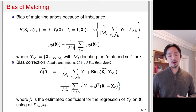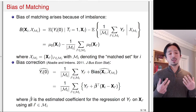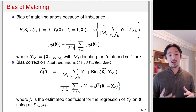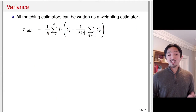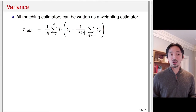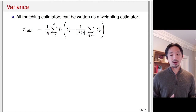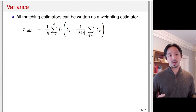Matching might still lead to bias due to remaining differences, which can be adjusted using a model. This indicates that matching can be used in conjunction with model-based adjustment — matching makes the treatment and control groups sufficiently similar, and then model-based adjustment handles the remaining imbalance in X. Turning to variance: the variance computation is very complicated for matching estimators. One way to think about it: all matching estimators can be written as weighting estimators, which is why matching can be viewed as a special case of weighting.